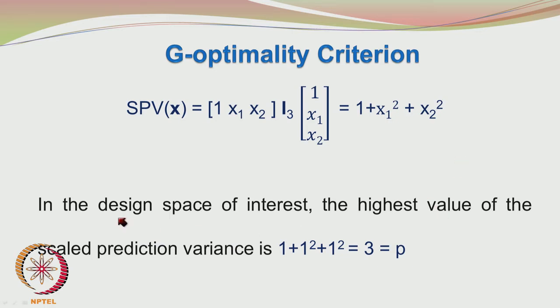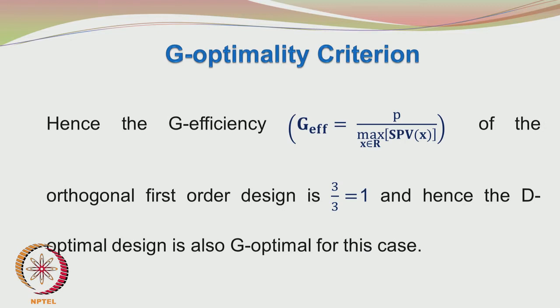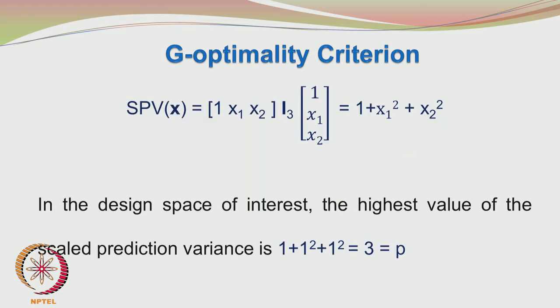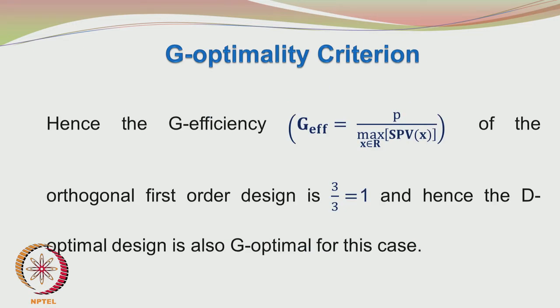In the design space of the 2^2 factorial design, all factorial points are located at plus or minus 1. So X1 squared equals 1 and X2 squared equals 1, giving 1 plus 1 plus 1 equals 3, exactly equal to the number of parameters p equals 3. The G-efficiency for this design is 3 divided by 3, which equals 1. Therefore, the D-optimal design is also G-optimal for this case.